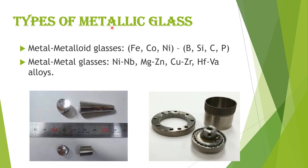Types of metallic glasses: Metal-metalloid glasses — metals such as iron, cobalt, and nickel combined with metalloids like boron, silicon, carbon, and phosphorus. Metal-metal glasses — combinations such as nickel-niobium, and alloys of magnesium, zinc, copper, zirconium, hafnium, and vanadium.